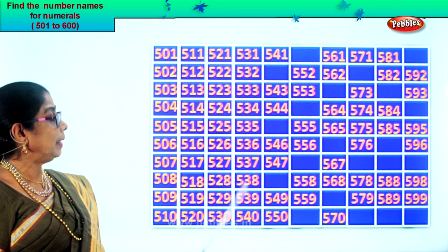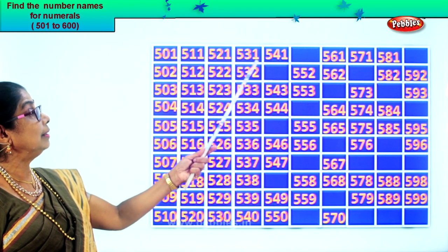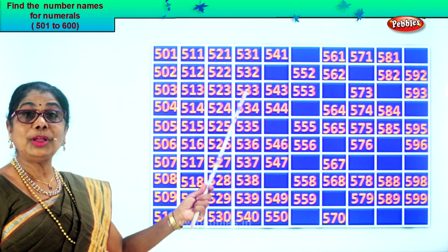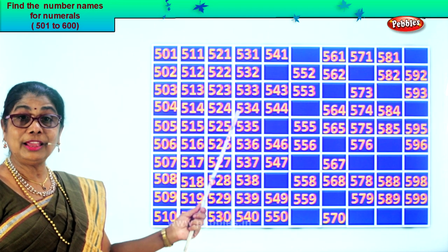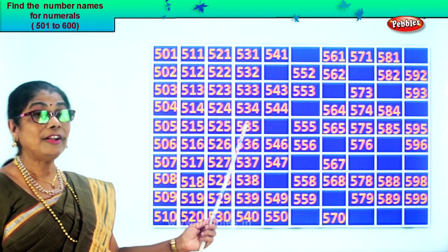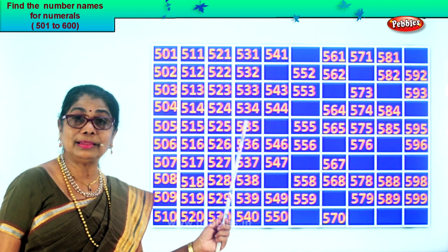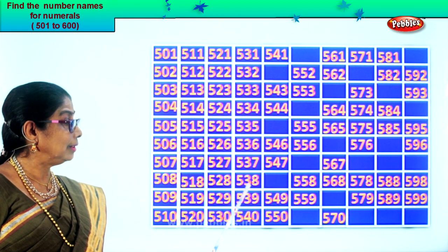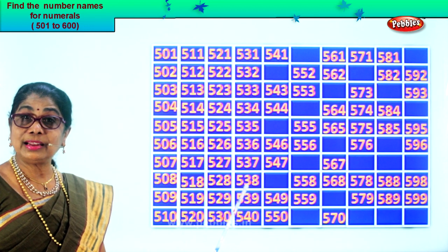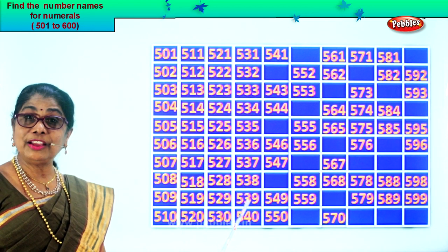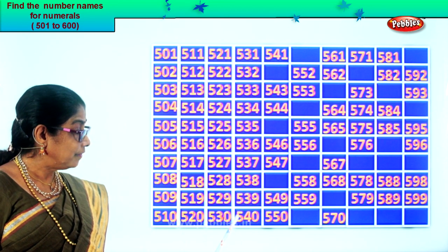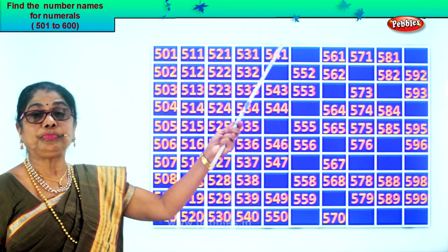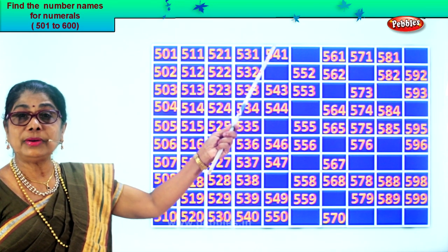Now let's read together: 531, 532, 533, 534, 535, 536, 537, 538, 539, 540. After 40, 41. 541.